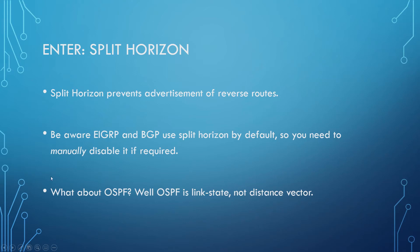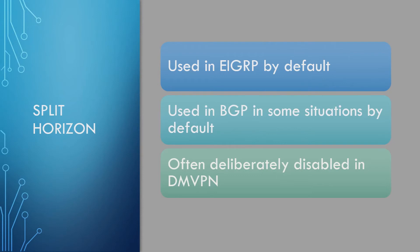It's worth noting that OSPF is a link-state protocol, not distance vector, so it doesn't have to worry about the split horizon issue. To summarize: split horizon is enabled by default in EIGRP and in some BGP situations, and it's often deliberately disabled in DMVPN configurations on the hub. That's something we'll cover in the DMVPN troubleshooting section later — but make sure you understand split horizon now so it won't be difficult later.